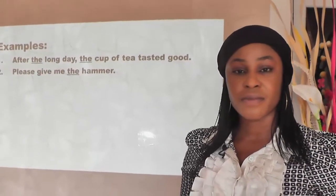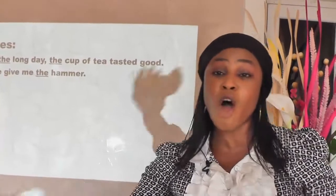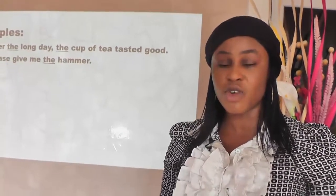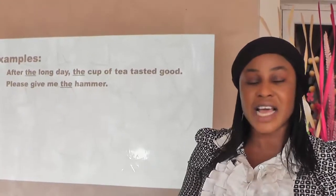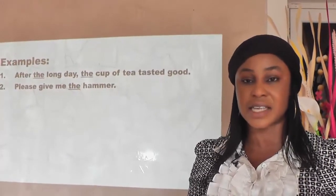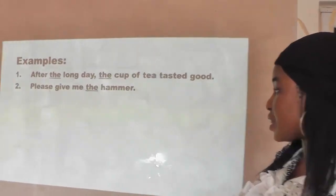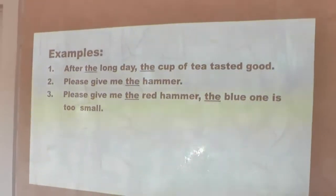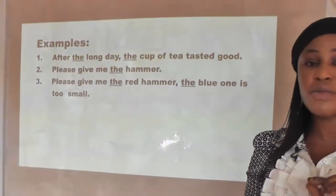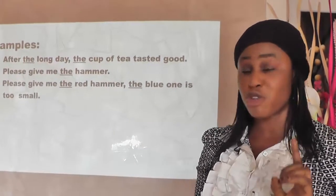For example: 'I saw a boy' — that first sentence is an introduction; you don't know the boy. But 'the boy' in the second sentence is giving more information about the boy from the first sentence. Another example: 'Please give me the red armor; the blue one is too small.' Article 'the' is used there — it has specified the type of armor you need.